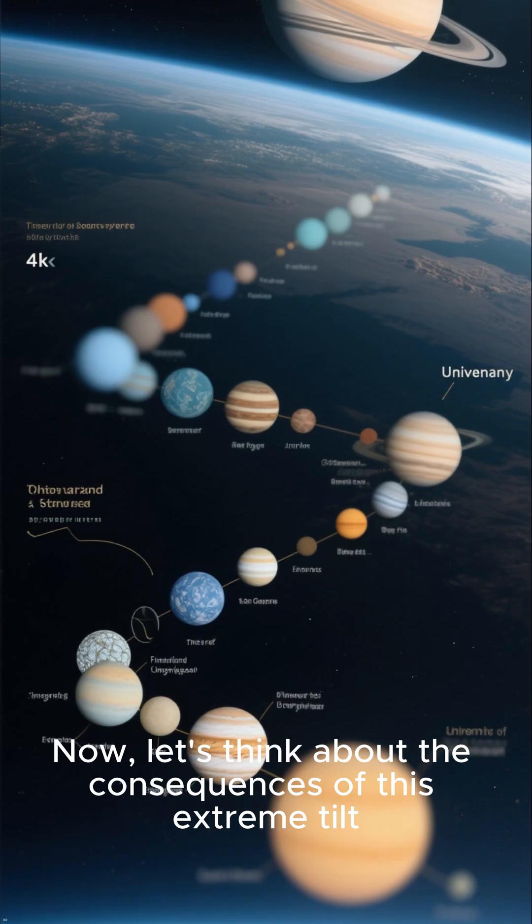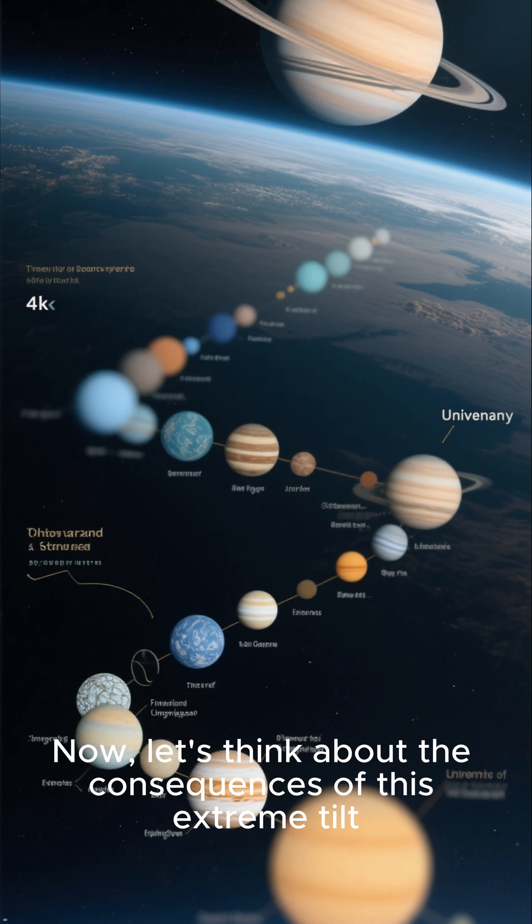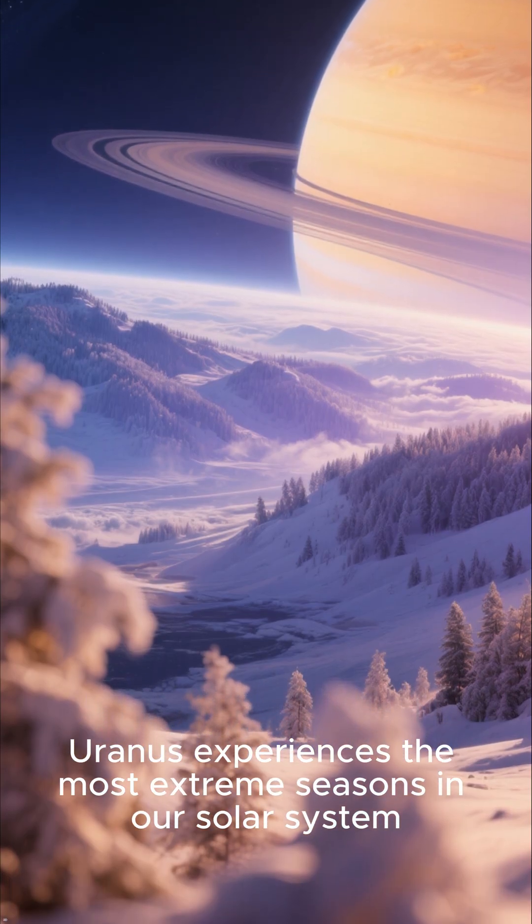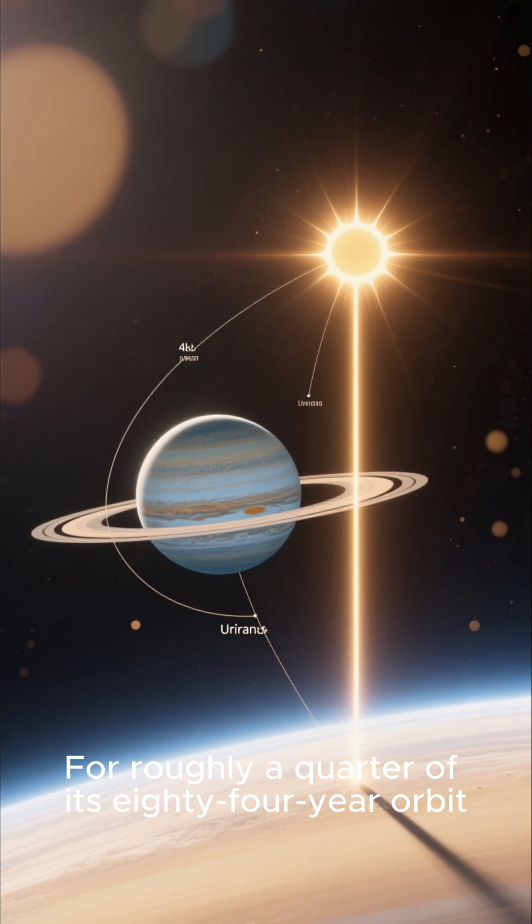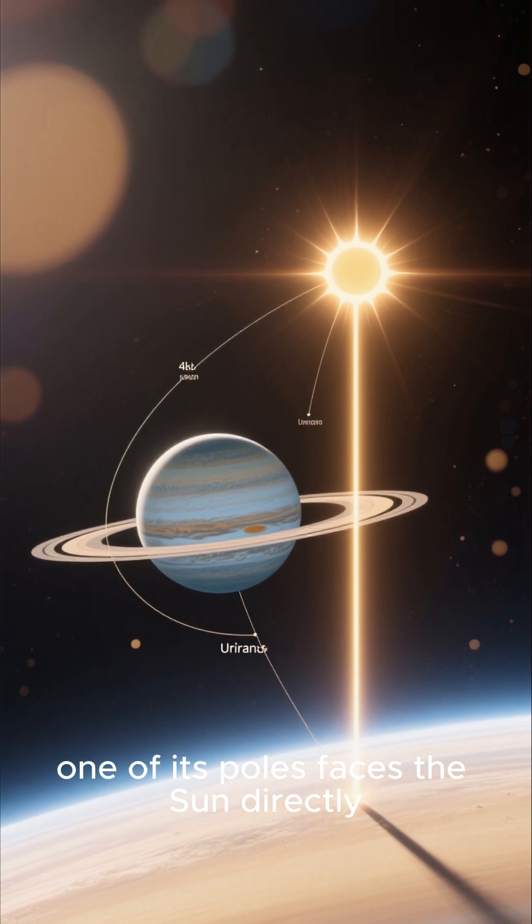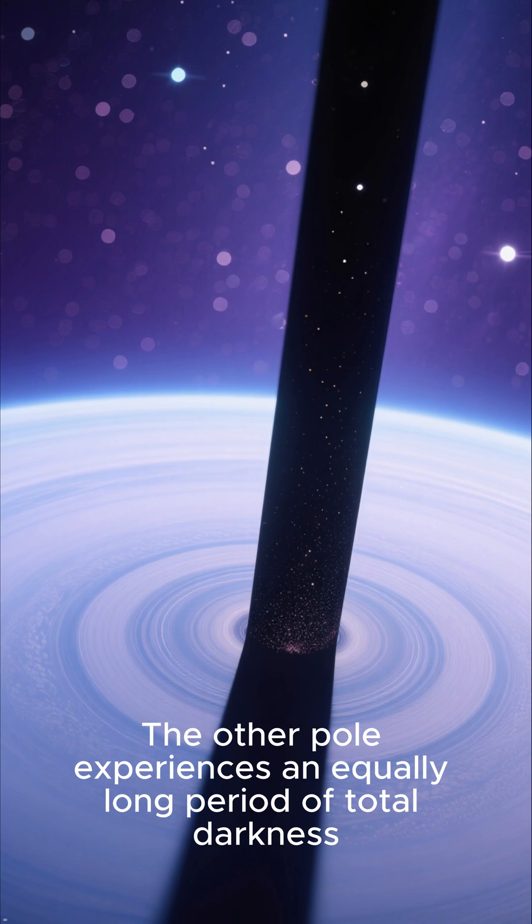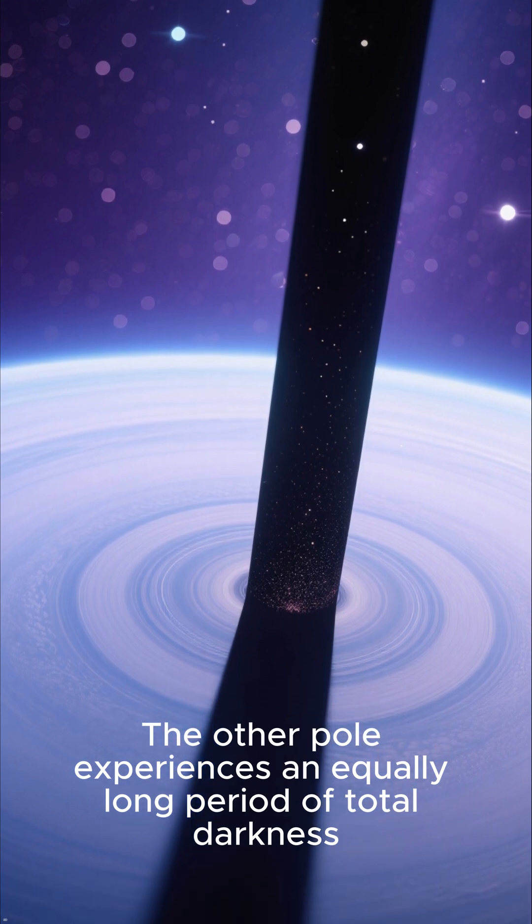Extreme seasons - let's think about the consequences of this extreme tilt. Uranus experiences the most extreme seasons in our solar system. For roughly a quarter of its 84-year orbit, one of its poles faces the sun directly, resulting in continuous daylight for 42 years. The other pole experiences an equally long period of total darkness.